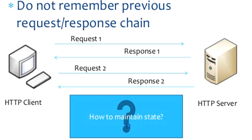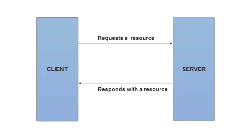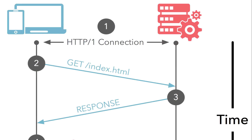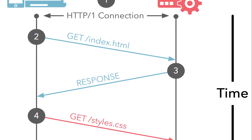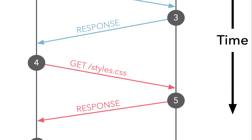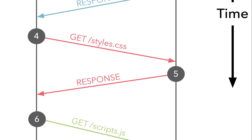HTTP is a stateless protocol, which means that there is no way for a server to remember a specific user across multiple requests. For example, when you access a web page, the server is only responsible for providing the content of the requested page, so when you access other pages on the same website, the web server takes each request separately, as if they were not related to each other.